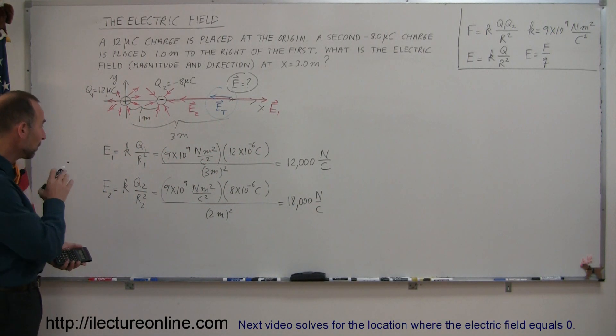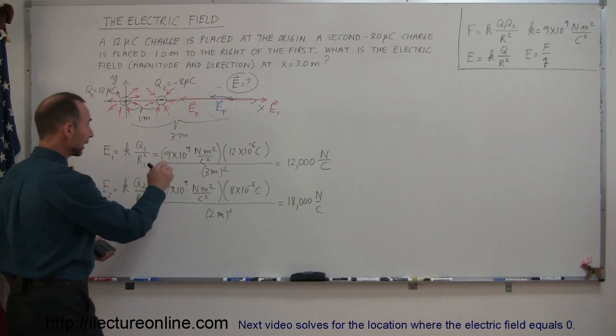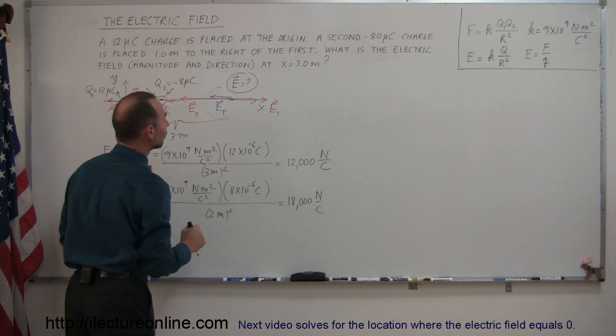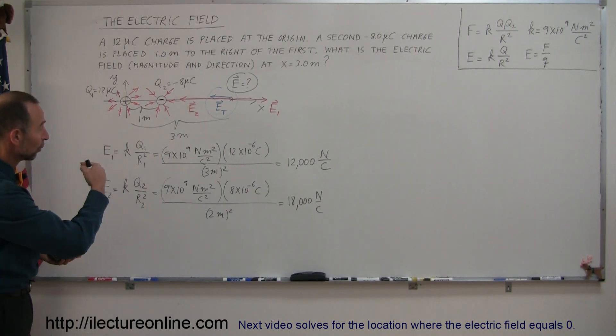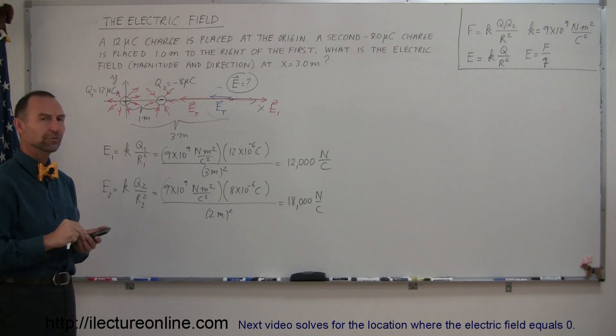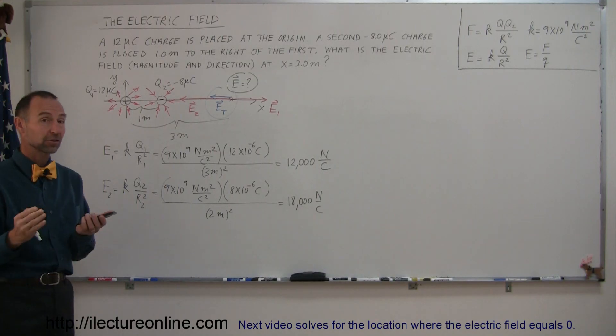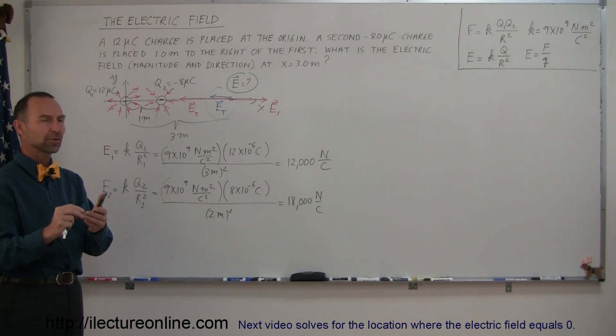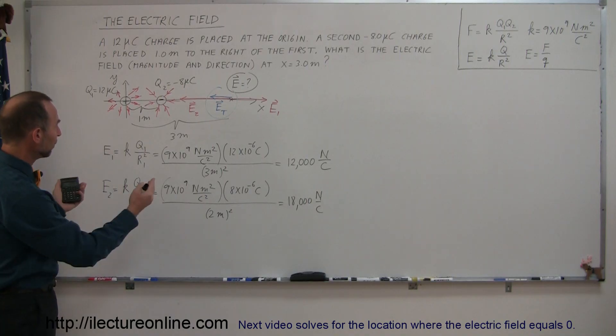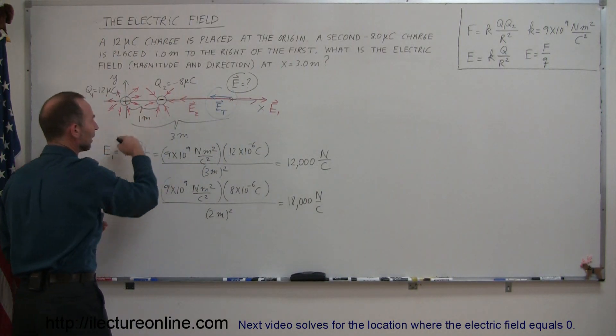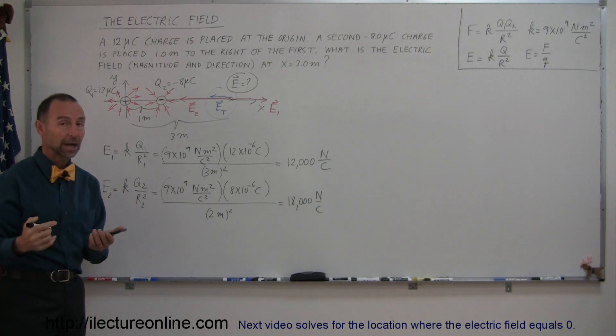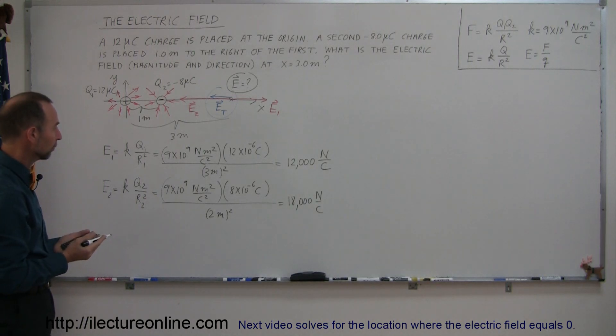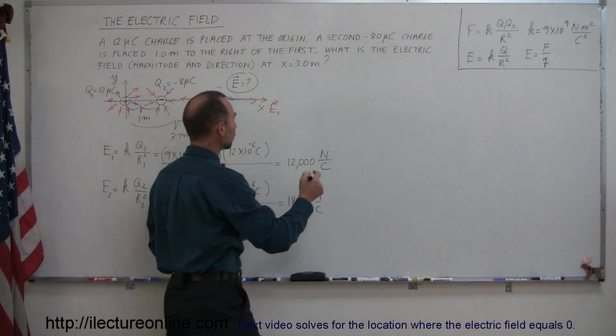Now we have the two magnitudes, and it does look like E2 has a bigger magnitude than E1. So the net electric field will be pointed to the left. Now we have to add the two vectors together. Remember when you add vectors together, you can only add x components and y components together. But in this particular example, since everything is on the x-axis, we only have x components, so we can do the vector sum.